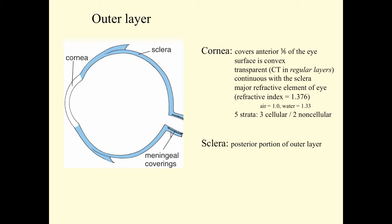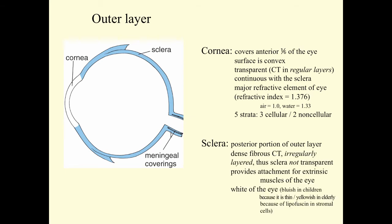The sclera is the posterior portion of the outer wall of the eye. It's a dense, fibrous connective tissue. The connective tissue is irregularly layered, so the sclera is not transparent like the cornea is. The sclera provides attachment sites for the extrinsic muscles of the eye and gives the eye its white color. It tends to be bluish in children because it's relatively thin, and more yellowish in the elderly because lipofuscin pigments will accumulate in the stromal cells.